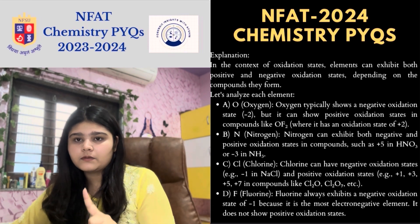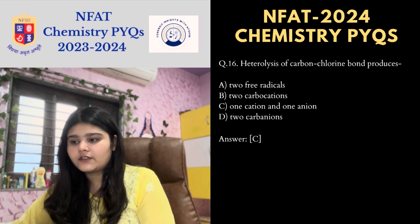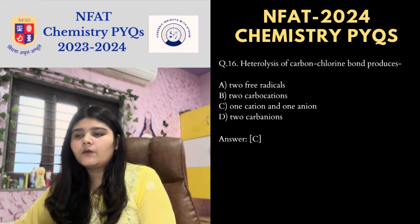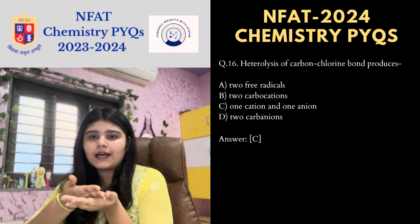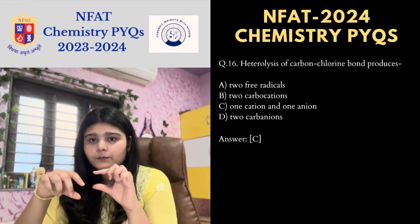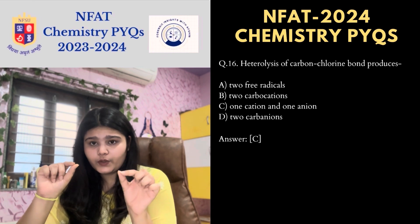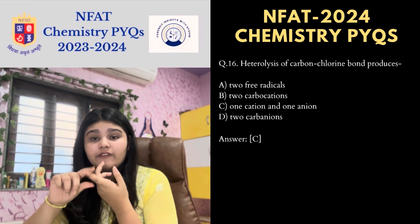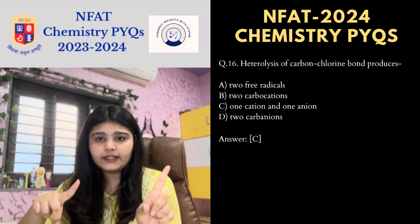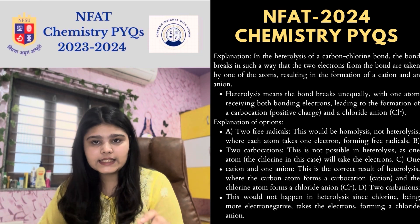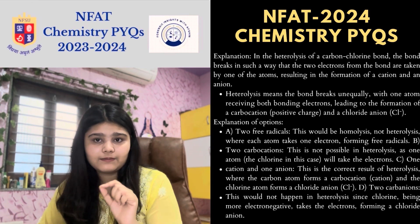Next MCQ: heterolysis of the carbon-chlorine bond produces what? In heterolysis, the bond breaks such that both electrons from the bond are taken by one atom, resulting in one cation and one anion. That's why option C is the correct option for this MCQ.